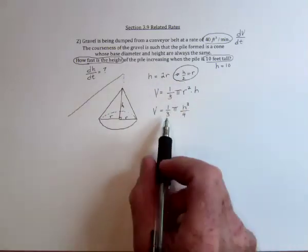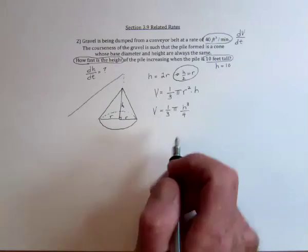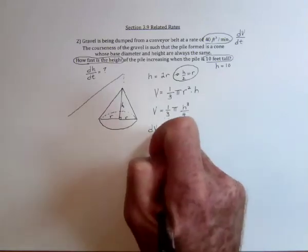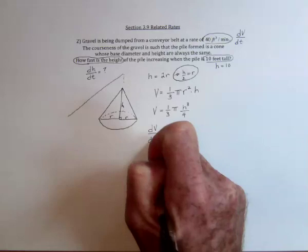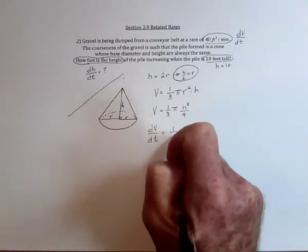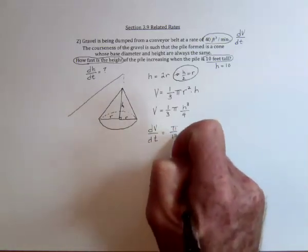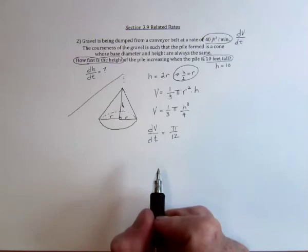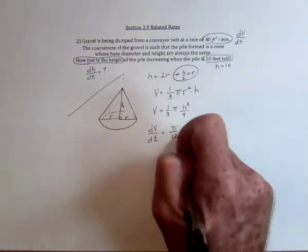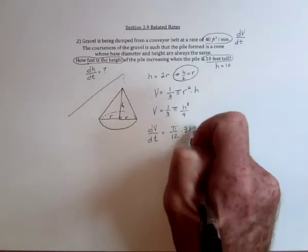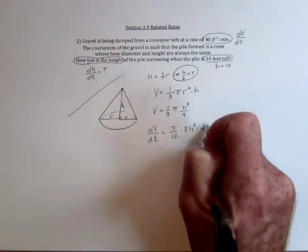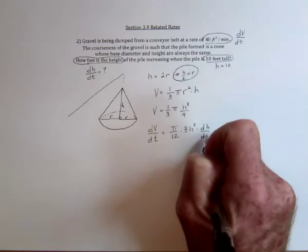So we've really got one-twelfth. Now take the derivative with respect to time. It's going to be, you can put the constants together, π over 12, and then take the derivative of h³ is 3h², and then times the derivative of h with respect to time.